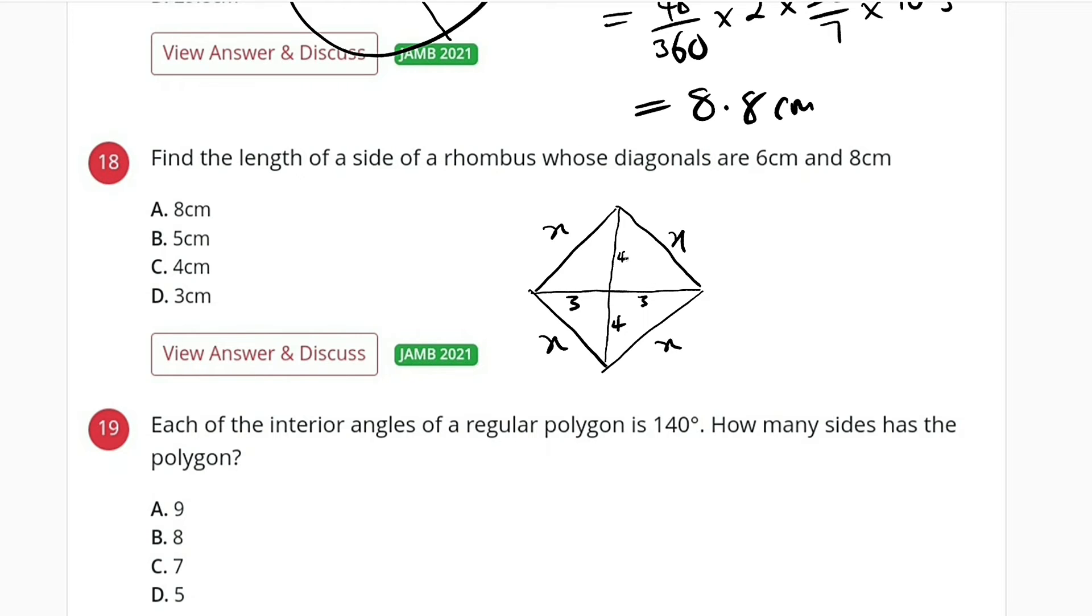So we can apply the Pythagorean rule here because we have a right angle triangle right here, which says that the hypotenuse squared...